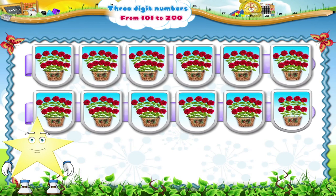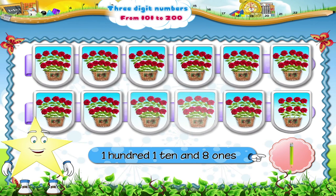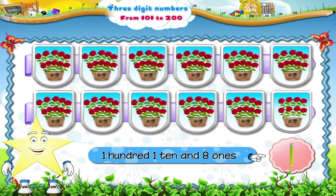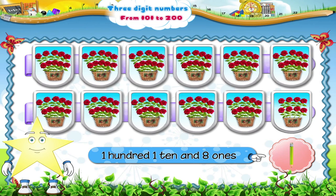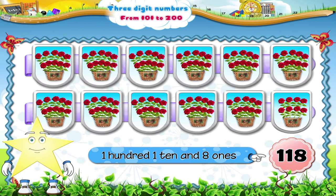Starry, what number is formed if there are one hundred, one ten and eight ones? Yes, the number formed is one hundred and eighteen. Did you understand how three-digit numbers are formed? Then let us see one more example.